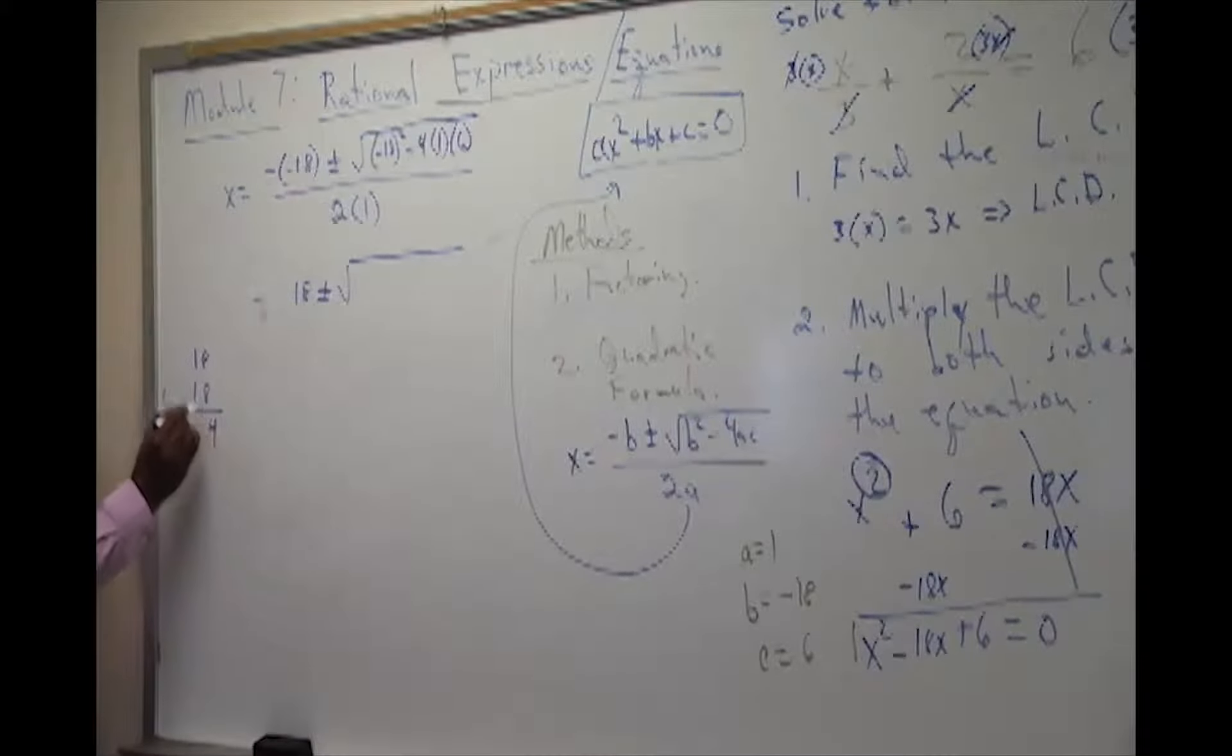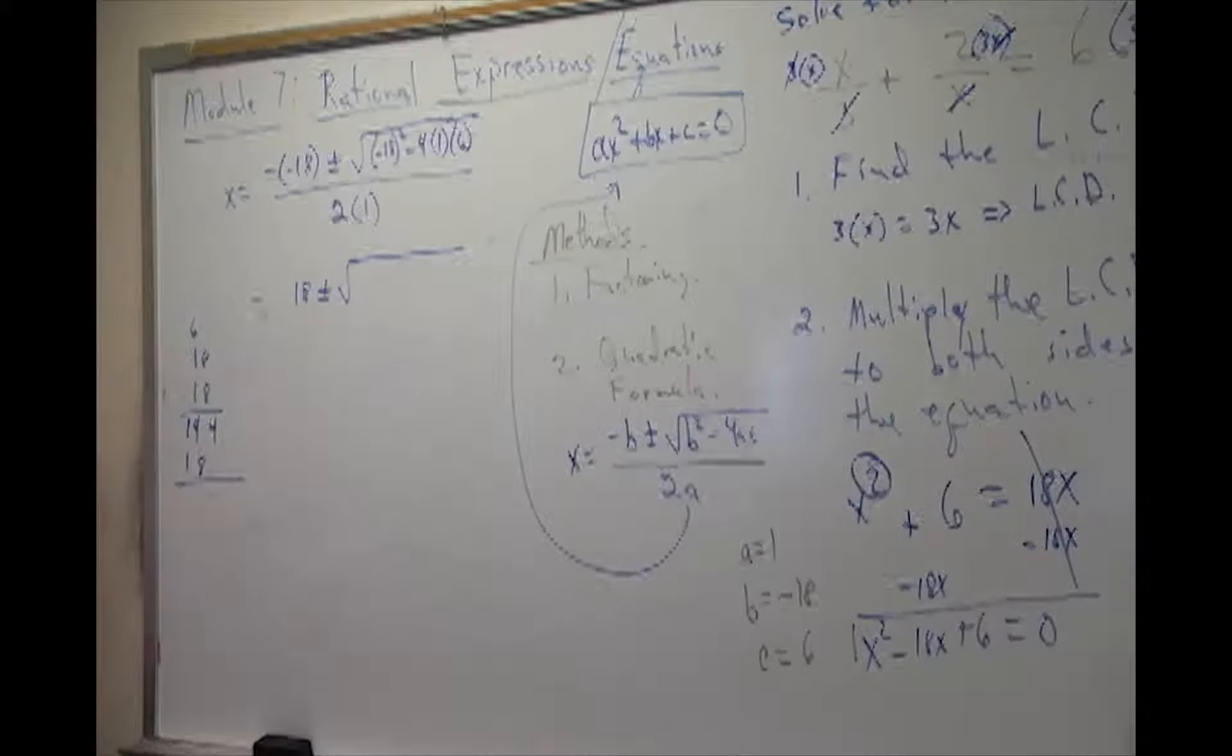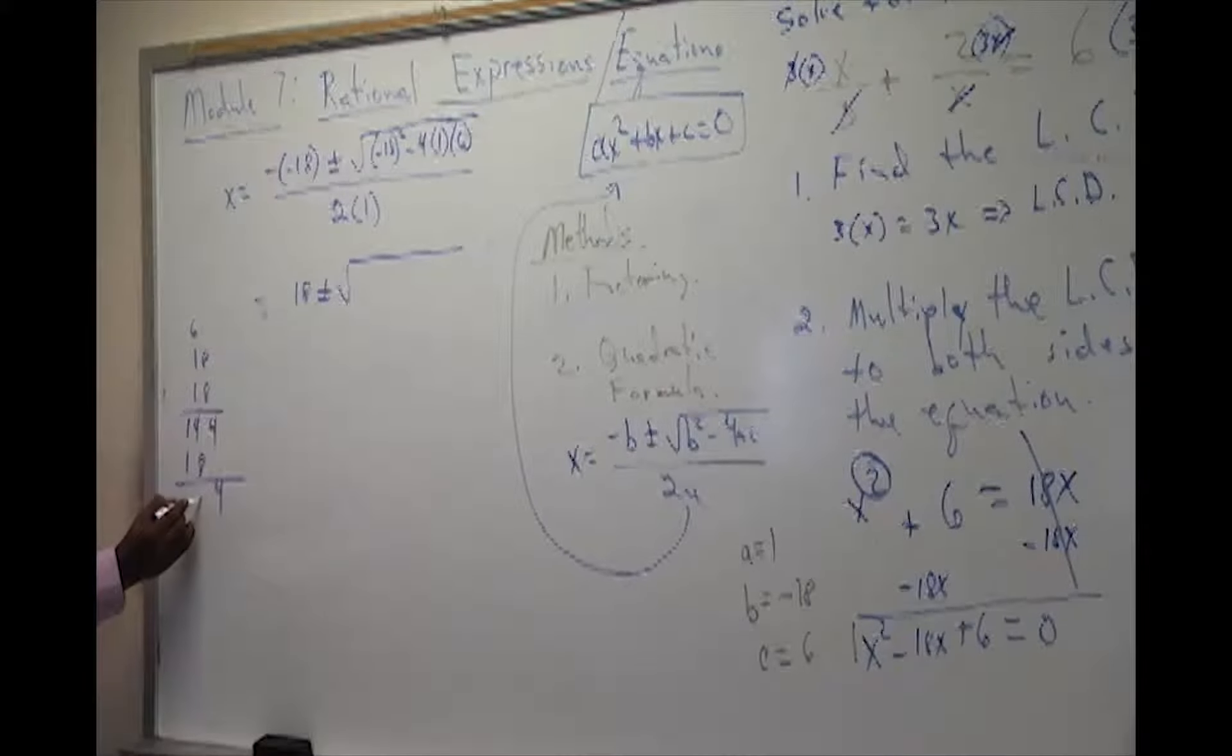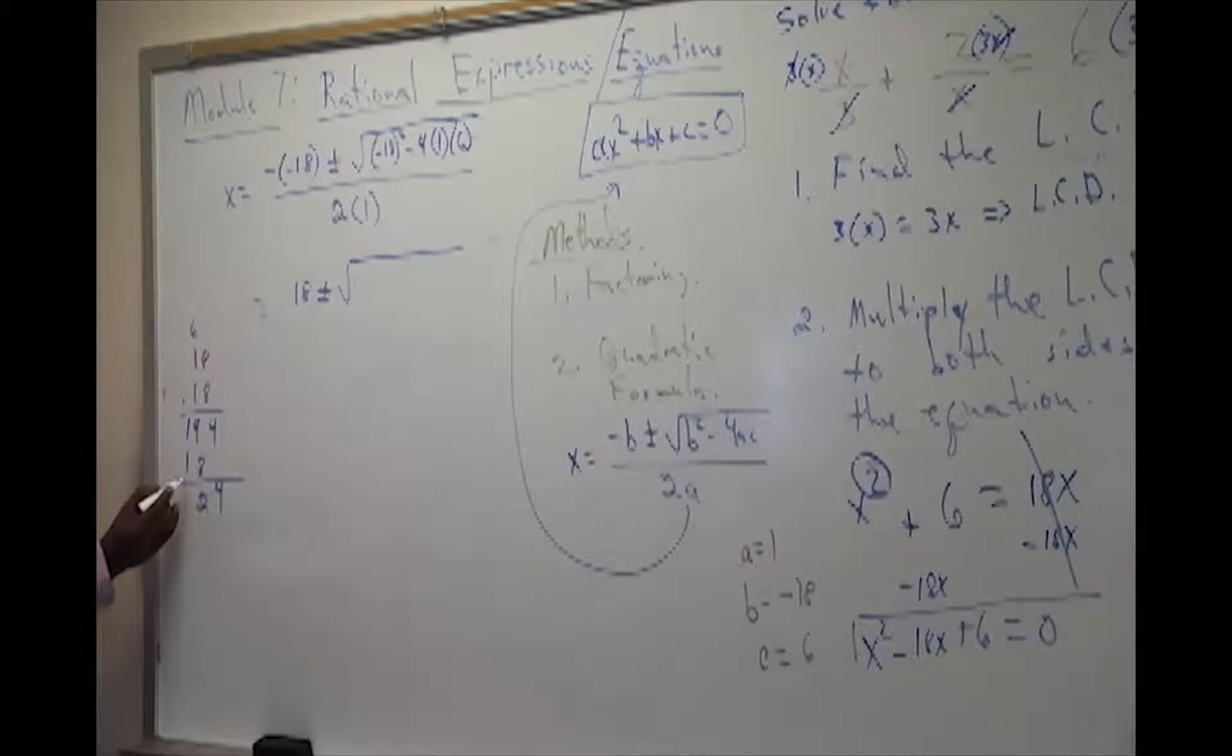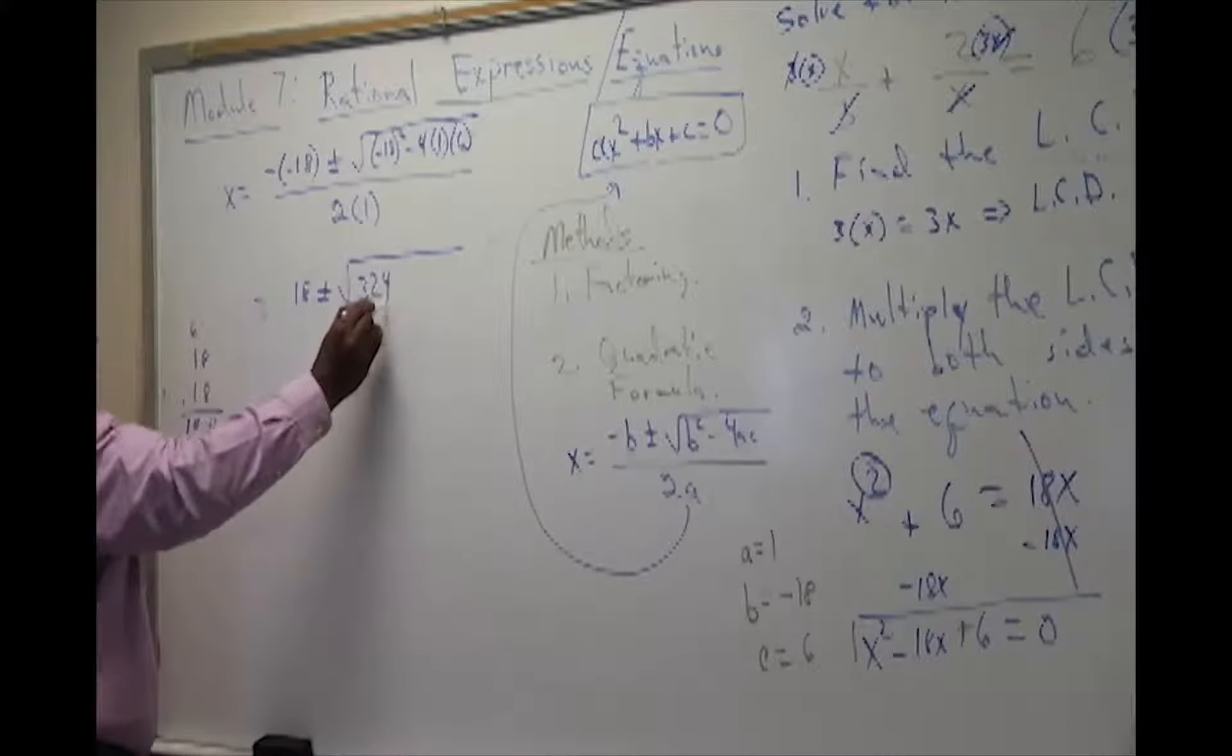8 times 8 will give us 64, carry your 6, and 8 times 1 is 8 plus the 6 will give us 14. We multiply by 1, 1 times 8 will give us 8, and 1 times 1 will give us 1. We combine it to give us 4. 8 and 4 will give us 12, carry your 1, and give us 3. So what we have here is 324.